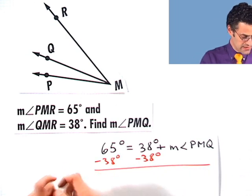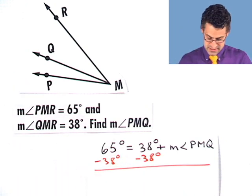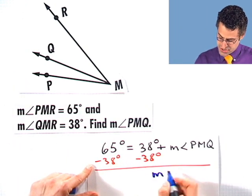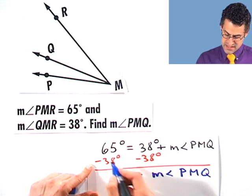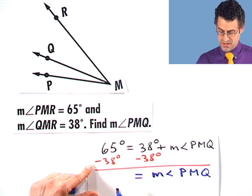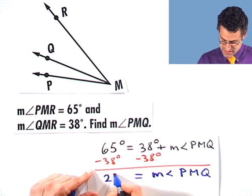And when I do that, that doesn't upset the scales and balance, this drops out. I'm just left with the measure of angle PMQ, but on this side I have 65 degrees minus 38 degrees, which equals 27 degrees.